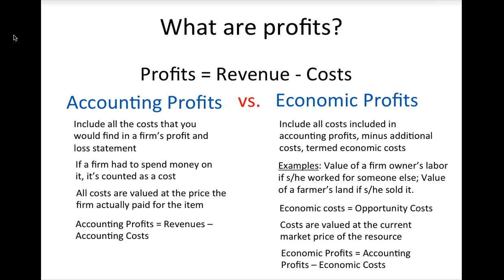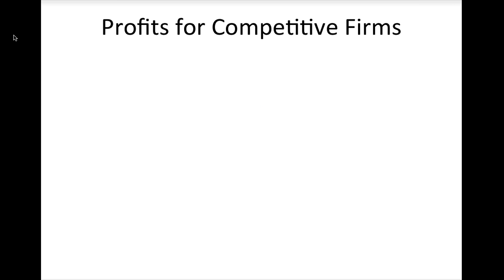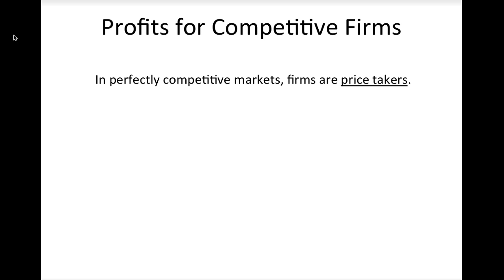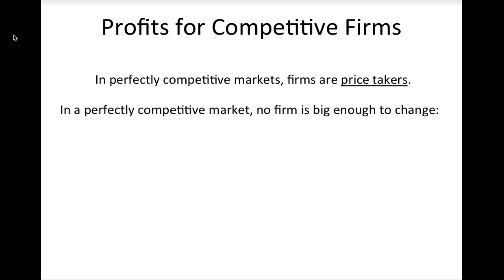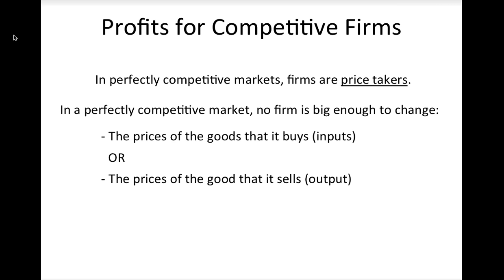To calculate economic profits, find the firm's accounting profits and then subtract its economic costs. We will start off analyzing firm behavior in perfectly competitive markets. In a perfectly competitive market, no firm is big enough to have an effect on either the prices of the goods that it buys or the prices of the goods that it sells. Thus, firms take all prices as given.